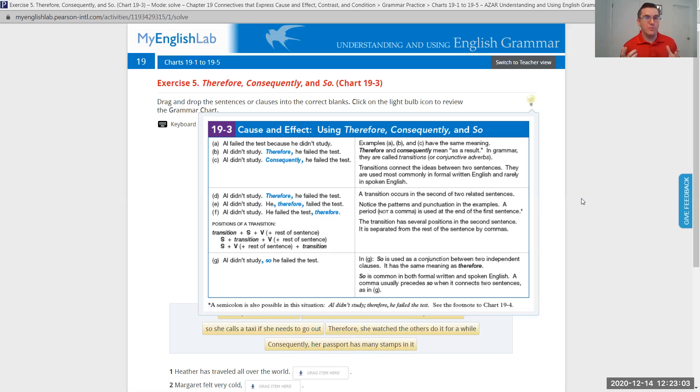Now let's look at example G, something a little different. Al didn't study, comma, so he failed the test. Here we see example G, this is one sentence. Al didn't study, comma, so he failed the test. So is used as a conjunction between two independent clauses. It has the same meaning as therefore and consequently. But it is not an adverb, it is a conjunction. So is common in both formal written and spoken English.